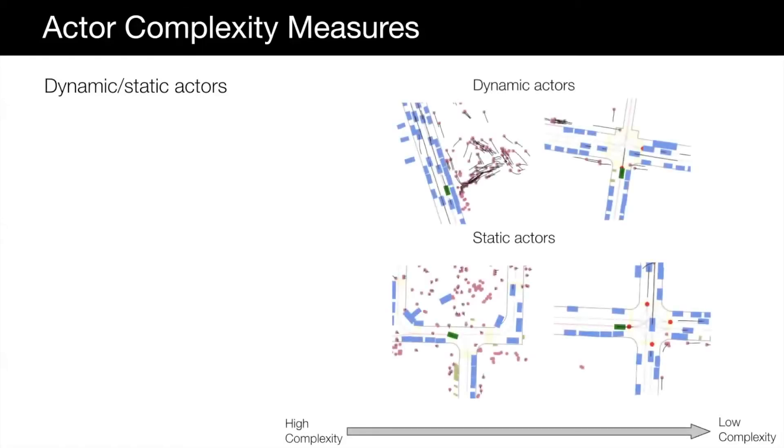The second set of complexity measures consider actors in the region of interest. We measured the density of static and dynamic actors in the scene. Here are example scenes of high static and dynamic actors shown on the left column compared to less crowded scenes on the right.